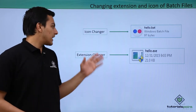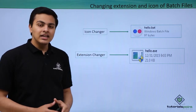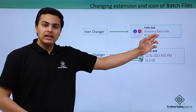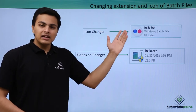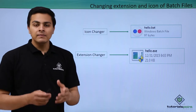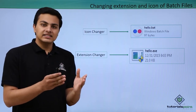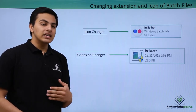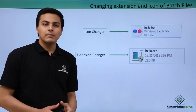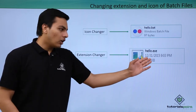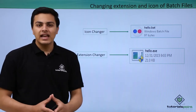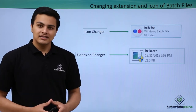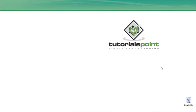We can change the icon and extension of that file by using some software. We can use Icon Changer to change the icon of the batch file. Here you can see that I have changed the icon of this batch file — it's still a Windows batch file, but the icon is changed. Similarly, we can also change the extension from .bat to .exe using an extension changer. Here you can see the extension is now .exe, making it an executable file.